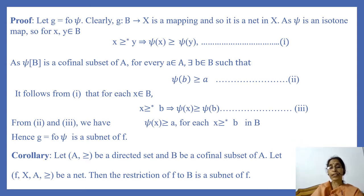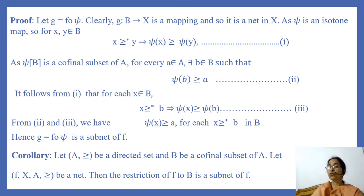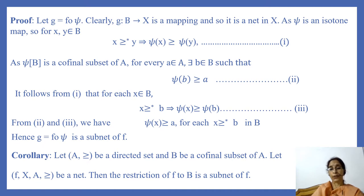Now we have a corollary. Let (A, ≥) be a directed set and B be a cofinal subset of A. Let (F, X, A, ≥) be a net. Then the restriction of F to B is a subnet of F.